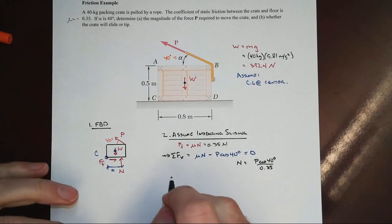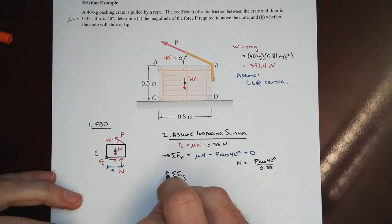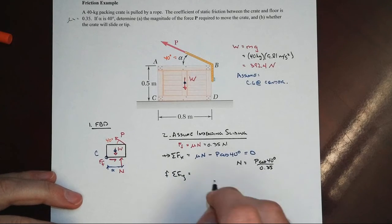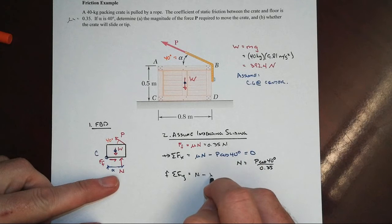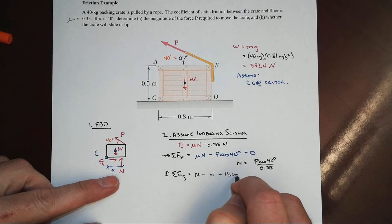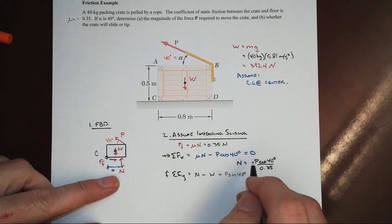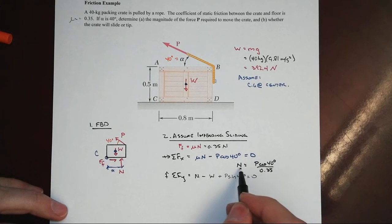And then we can sum forces in the y direction. And we'll have n minus our weight plus the vertical component of our force. From which, when we substitute in the mu expression for the normal force...